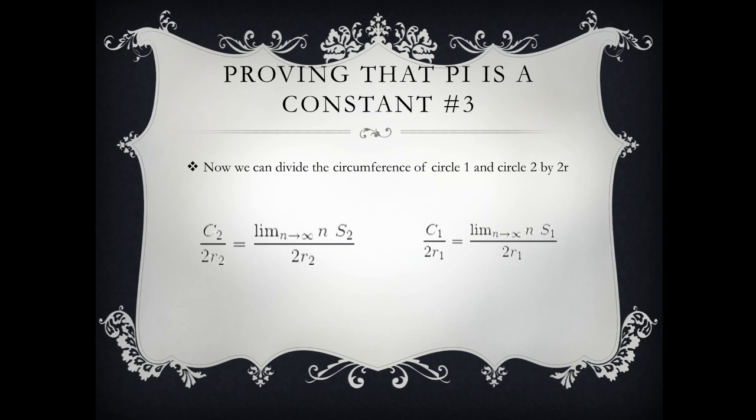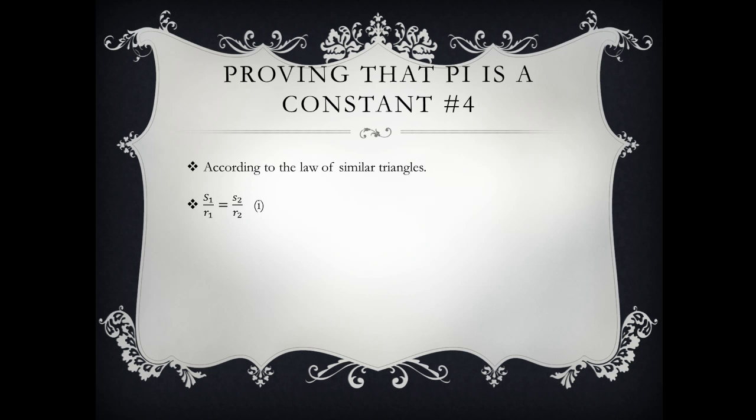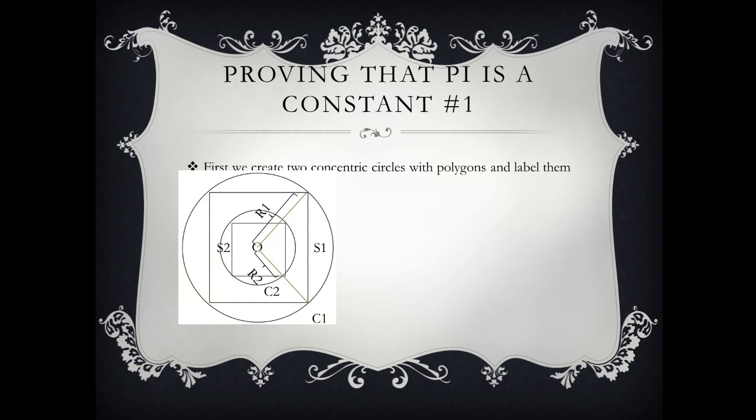Now we divide both of them by their diameter. So circumference of circle 2 divided by the diameter which is two times the radius. Now if you might notice you have a triangle over here. One triangle and then you have second triangle.